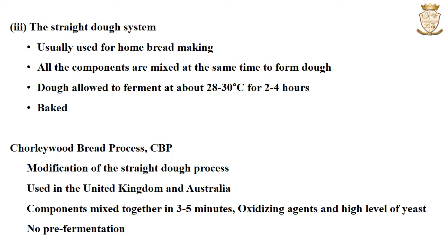In the straight dough system, all the components are mixed at the same time until a dough is formed. The dough is then allowed to ferment at about 28 to 30 degrees Celsius for 2 to 4 hours, and then it is baked. The straight dough system is usually used for home bread making.